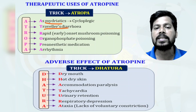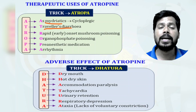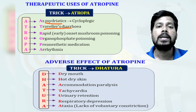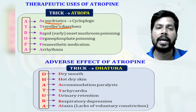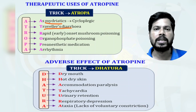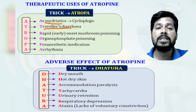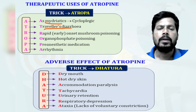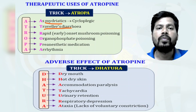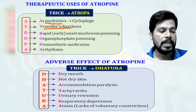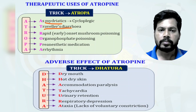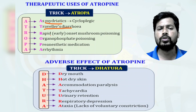Atropine is also used to control traveller's diarrhea. Traveller's diarrhea mainly causes upset in the stomach, increases GI movements similar to diarrhea, and muscle cramps in the GI tract. It is called traveller's diarrhea because if we go to an area containing unhygienic water or food, we get diarrhea. Atropine is used to control this.